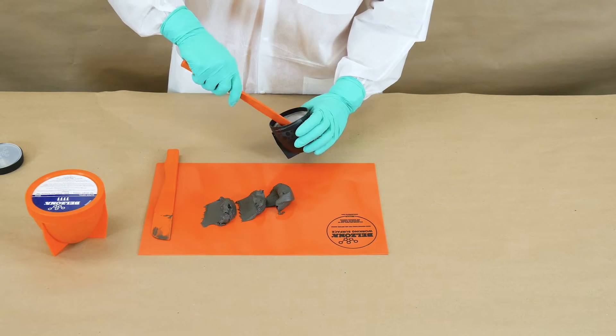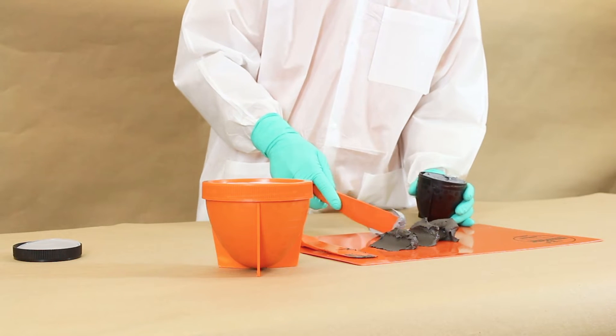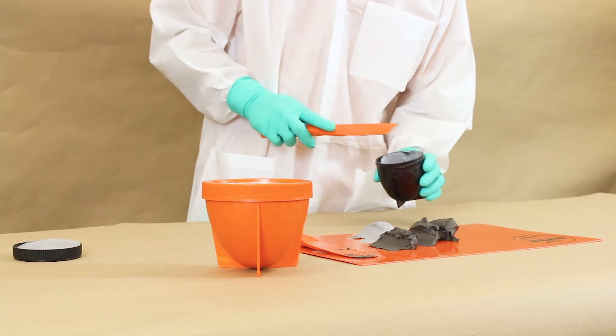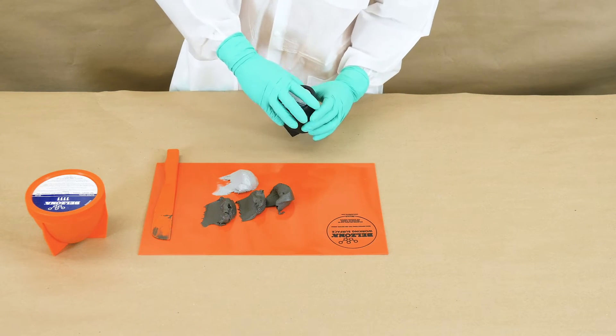Measure one part of Belzona 1111 solidifier and transfer it to the working surface. Place the seal and cap back onto the container to store for further use.